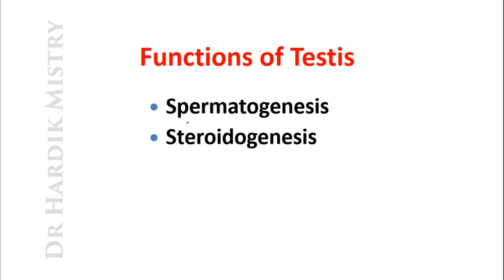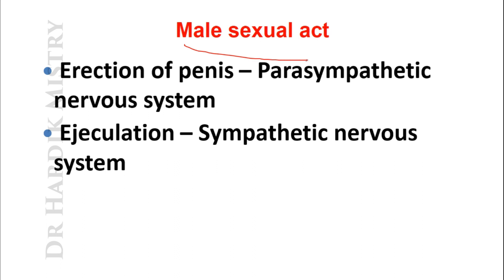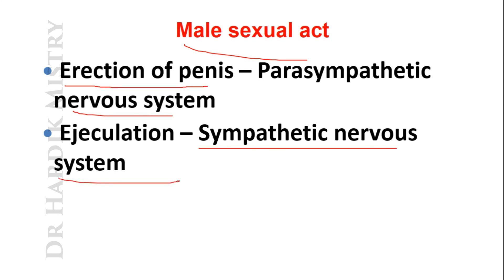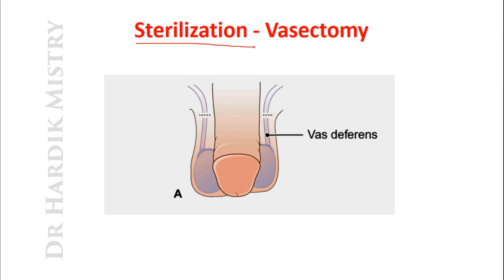The two main functions of the testis are spermatogenesis and steroidogenesis. In the male sexual act, two processes take place: erection of the penis, regulated by the parasympathetic nervous system, and ejaculation (emission of semen), regulated by the sympathetic nervous system. The sterilization method in males is vasectomy, in which the vas deferens is cut and tied. At the time of ejaculation, sperm cannot be present in the semen — it is a voluntary sterilization method.